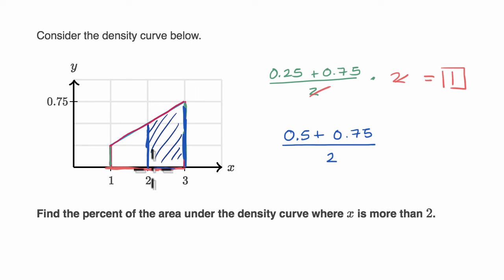The base going from two to three is equal to one. So times one. And so this is going to give us 1.25 over two. And what is that going to be equal to?